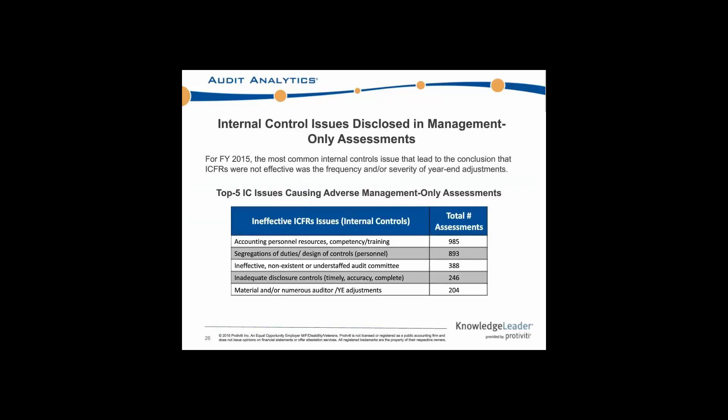Like we did for the auditor attestations, we go in and look at both internal control issues and accounting-related issues causing these ineffective ICFRs. Looking at the internal control issues causing the adverse management-only assessments, there's no major surprise as to what the two most popular issues are. Accounting personnel resources, competency and training, and then segregation of duties were by far and away the two most common issues. We're talking about smaller companies, smaller staff, less resources, so no surprise it's the training of employees and the segregation of duties design of controls that are causing these issues.